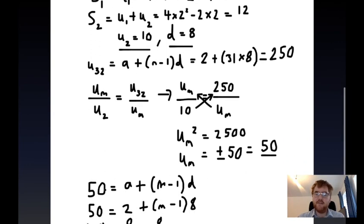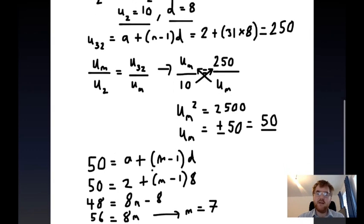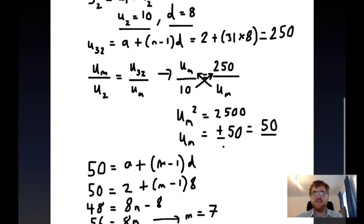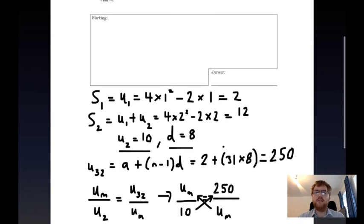Finally, we know un is equal to 50, so we know that 50 is equal to a plus n minus 1d, but n is m in this case because it's this letter here. Then we have a linear equation we can solve to work out that m is 7. m must be the seventh term of the sequence. Hope you enjoyed that video. It's something a little bit different and hopefully you found it useful. If you want more videos like this, please like, please comment, please let me know. Bye bye for now.